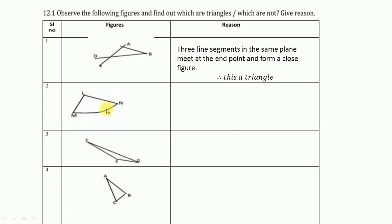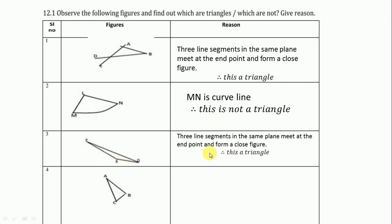In the next figure, see MN is not a line segment, it is a curved line. So we write MN is a curved line, so this is not a triangle. And PQR is a triangle because three line segments in the same plane meeting at the end point and form a closed figure, so this is a triangle. In ABC, see here it is not clear in the book but it is clear in the PDF, so small gap is there here. So we write it is not a closed figure, so that's why it is not a triangle.